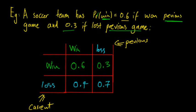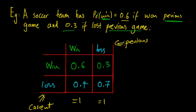A quick way to check if you've got it right is that the columns must equal 1. The rows don't have to equal 1. The reason the columns have to add up to 1 is because if previously they won, there are only two current outcomes and a current outcome must occur. So if they've won previously, they must win or they must lose, therefore the probability must add up to 1.